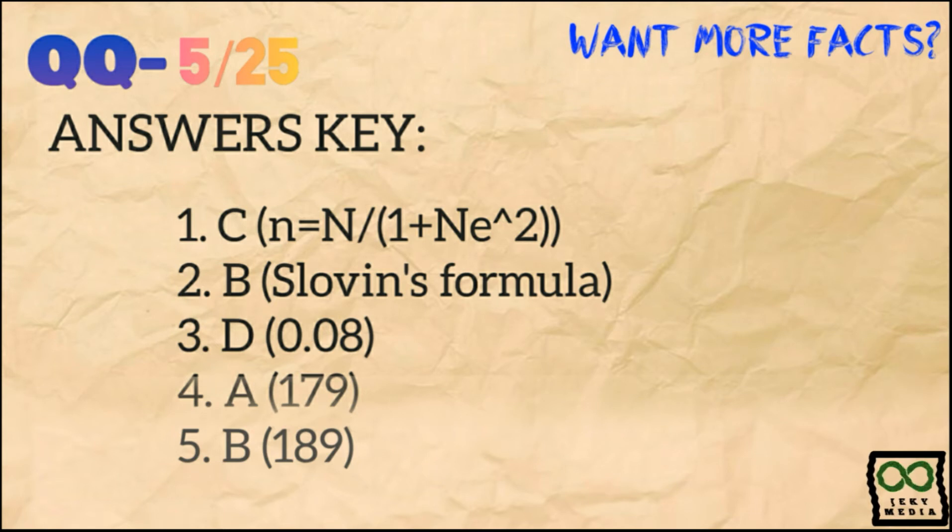Here is the answer key. Number 1: C. Sample size equals population size over 1 plus population size times margin of error squared. Number 2: B. Slovin's formula. Number 3: D. 0.08. Number 4: A. 179. Number 5: B. 189.